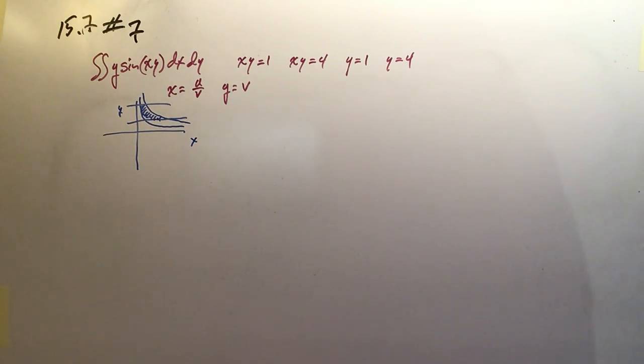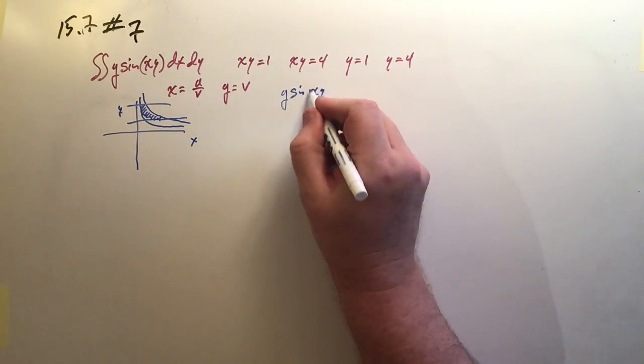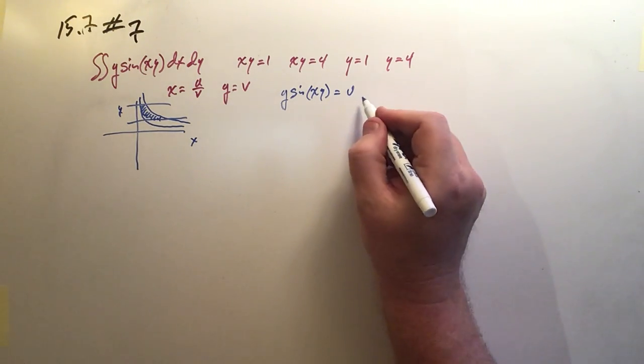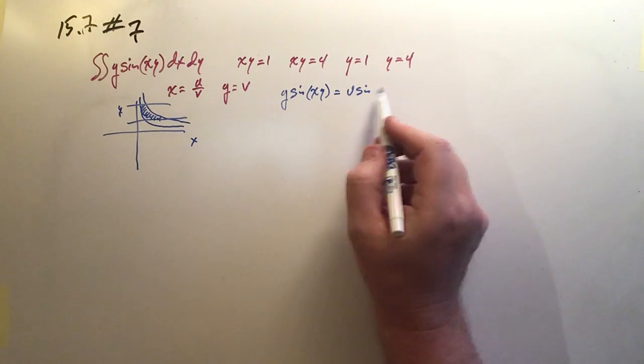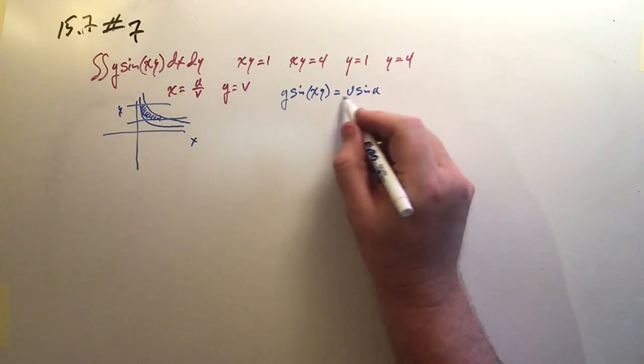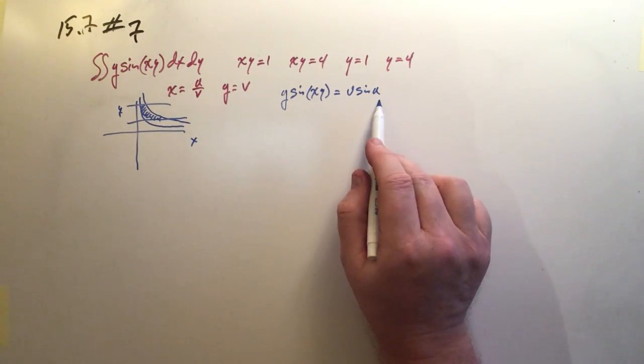So let's see how we go about doing that. So first, what we want to do is take the argument and transform it. So if it's y sine of xy, what's that going to be? Well, y is v sine, and xy is u over v times v. So that'll just be u. And you can see it's v sine u. So this got a whole lot easier looking right off the bat.